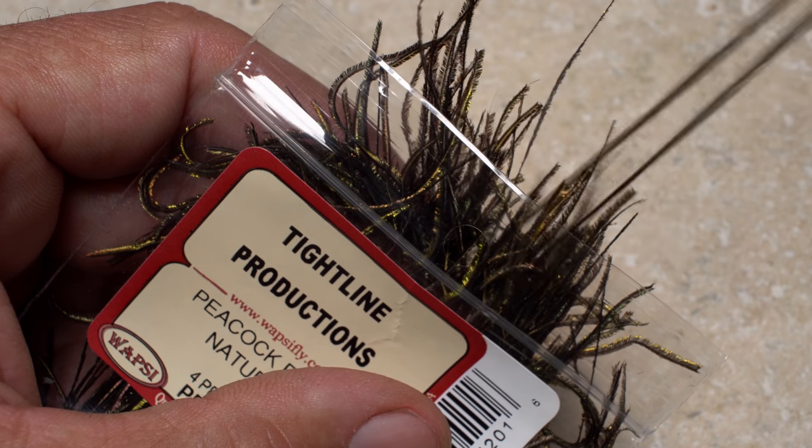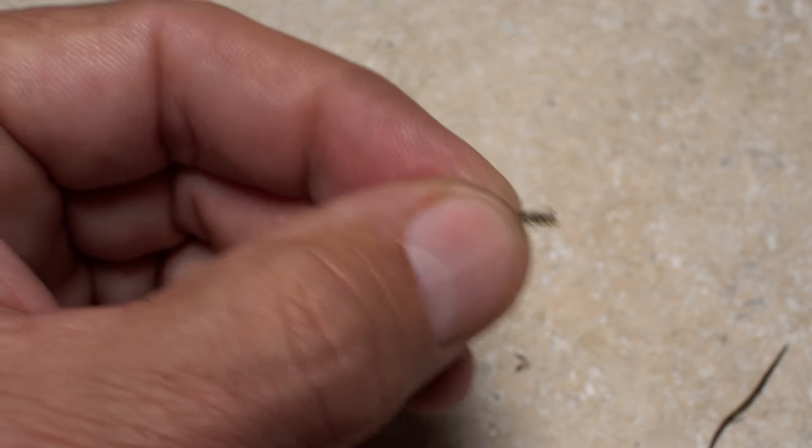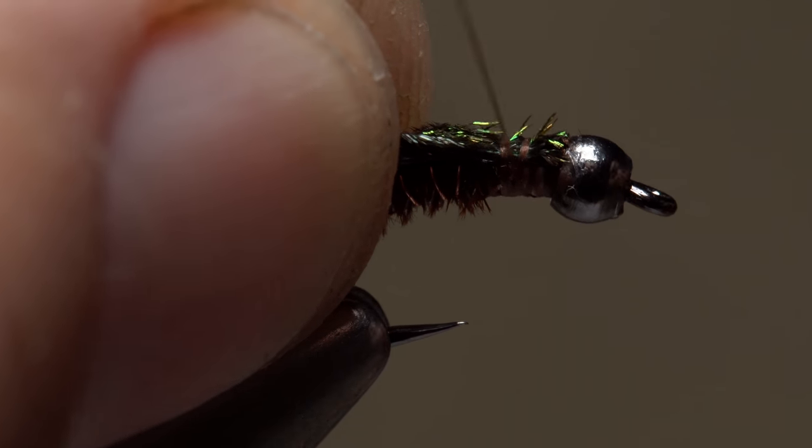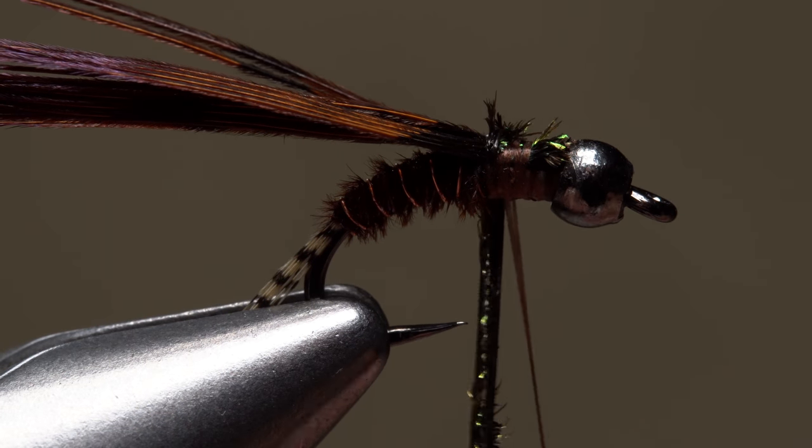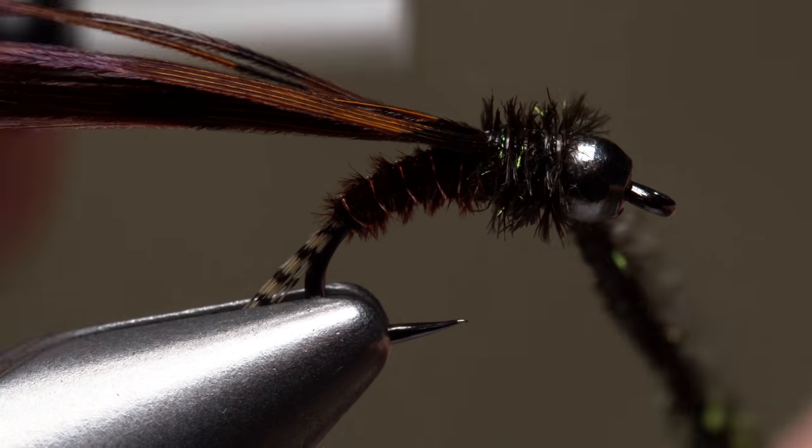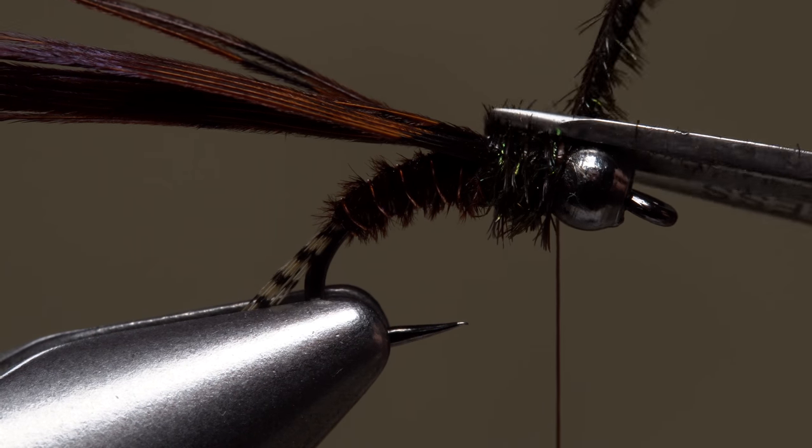The thorax of the fly is created using two peacock hurls. Snip the delicate tips off square, then place them on top of the hook shank and take thread wraps to secure them. Again, make wraps behind your tying thread to keep the hurls together. When you reach the bead, secure the hurls with a few turns of tying thread, then snip the excess off close.